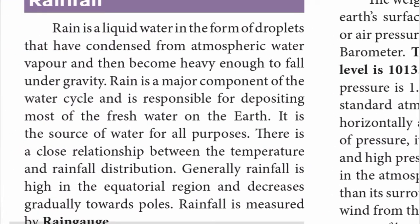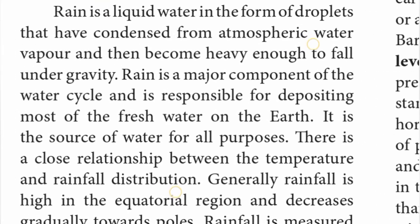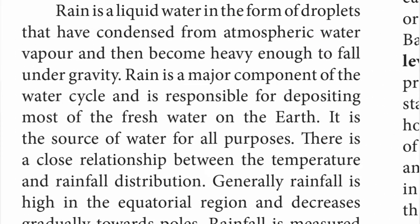Rain is liquid water in the form of droplets that have condensed from atmospheric water vapour and then become heavy enough to fall under gravity. Rain is a major component of the water cycle and is responsible for depositing most of the fresh water on the earth.